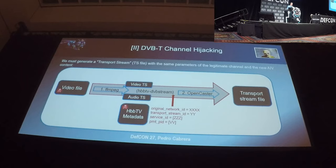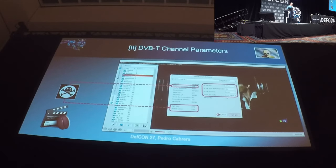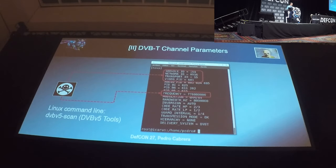How do we get those parameters? Using Kaffeine — a nice desktop utility to watch TV on Linux — double-clicking on a channel station brings up a small window showing not only the frequency but also the network ID, stream ID, and all the parameters we need to impersonate. If you prefer command line, you can use dvbscan inside the dvb5tools — it creates a text file with one entry per channel and all parameters inside.